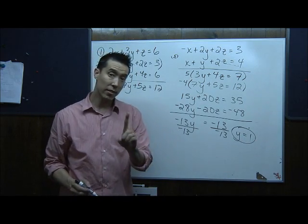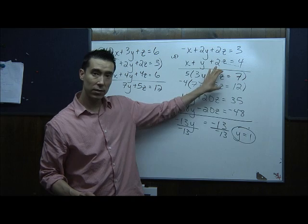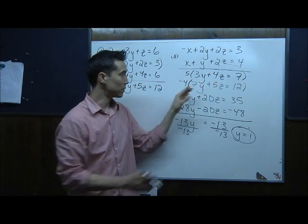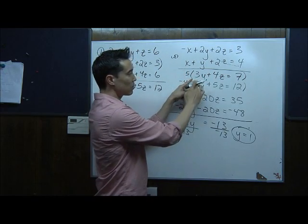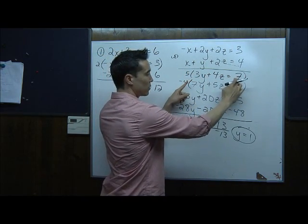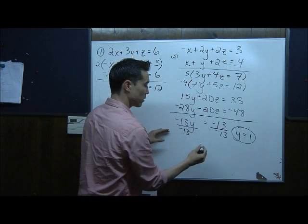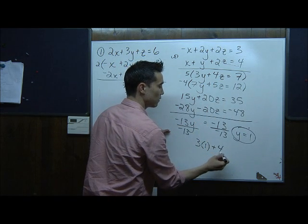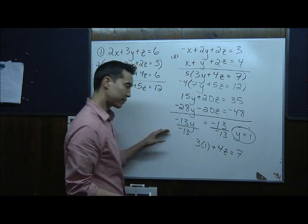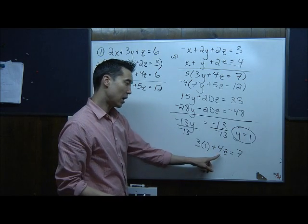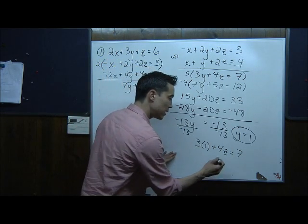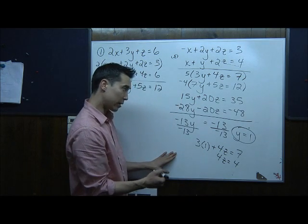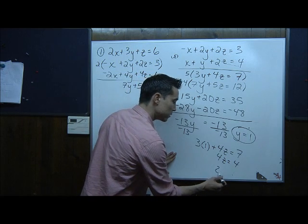Adding straight down, the positive 20z and negative 20z drop out. I get negative 13y equals negative 13. Dividing both sides by negative 13, y equals 1. Once I have y equals 1, I go back to the equation 3y plus 4z equals 7, plug in y equals 1: 3 times 1 plus 4z equals 7, so 3 plus 4z equals 7. Subtracting 3, 4z equals 4, and dividing by 4, z equals 1.